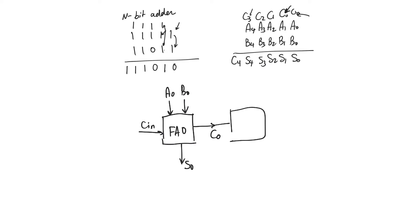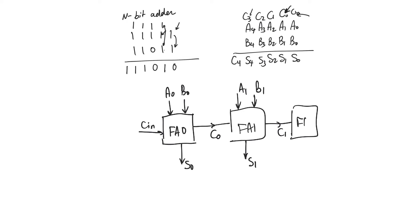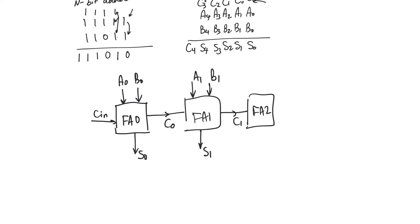C0 is going to be used as a carry-in for the next bit position for full adder 1, where it will be combined with A1 and B1 to produce S1 and C1. This is going to go to full adder 2, where it's going to be combined with A2 and B2 to produce S2 and C2, and so on.